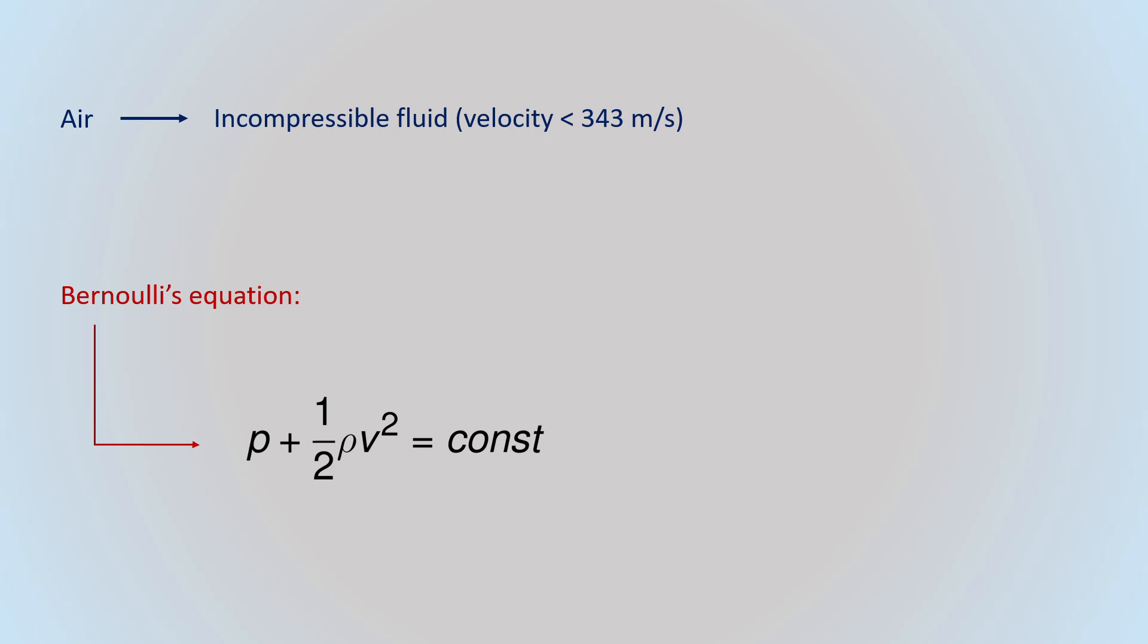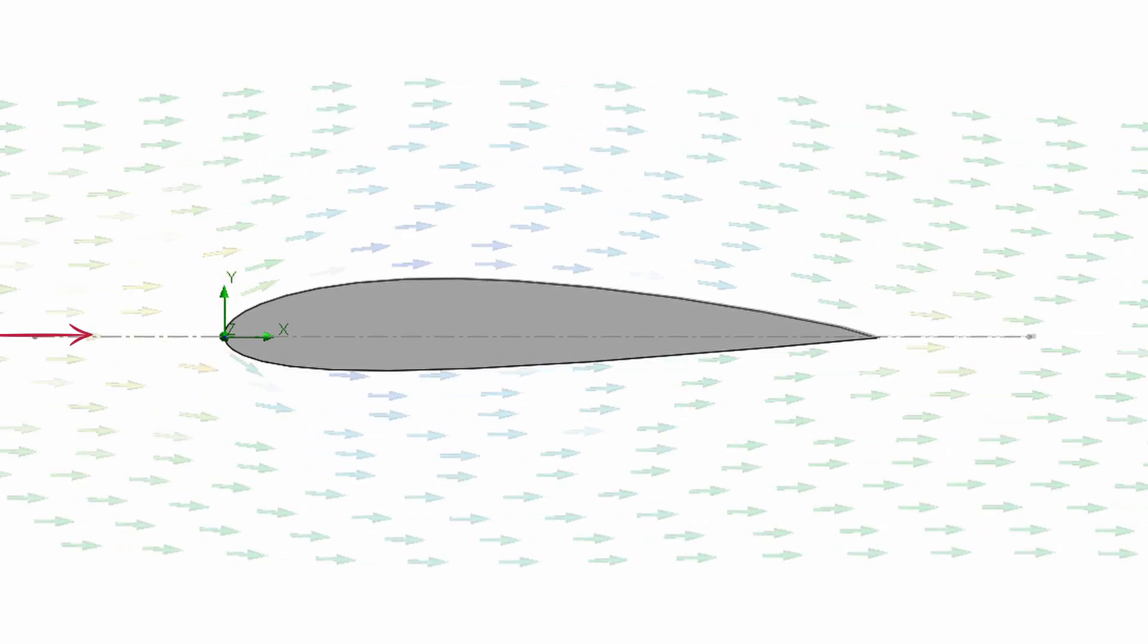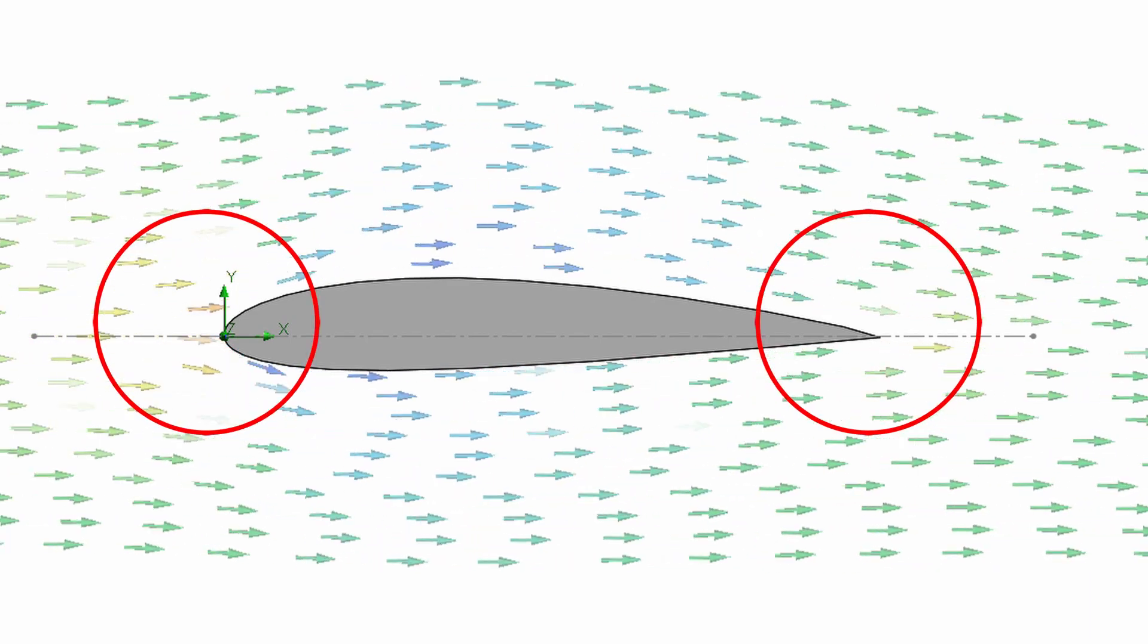The Bernoulli equation states that increasing the speed of the fluid, the static pressure decreases and vice versa. Now, considering an airfoil and a horizontal air flow coming from this direction, we can observe that in these two areas the velocity drops, and so the pressure raises.